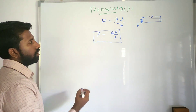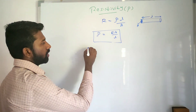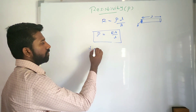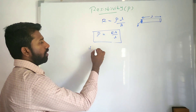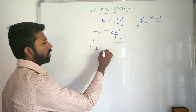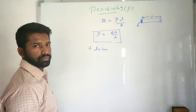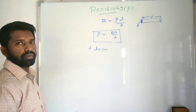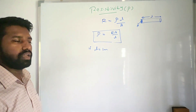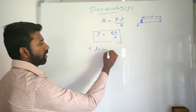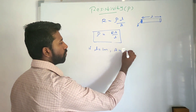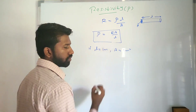Now I am going to substitute a condition: if L is equal to 1 meter, that means the length of the wire is 1 meter, and the area cross-section is 1 meter square.